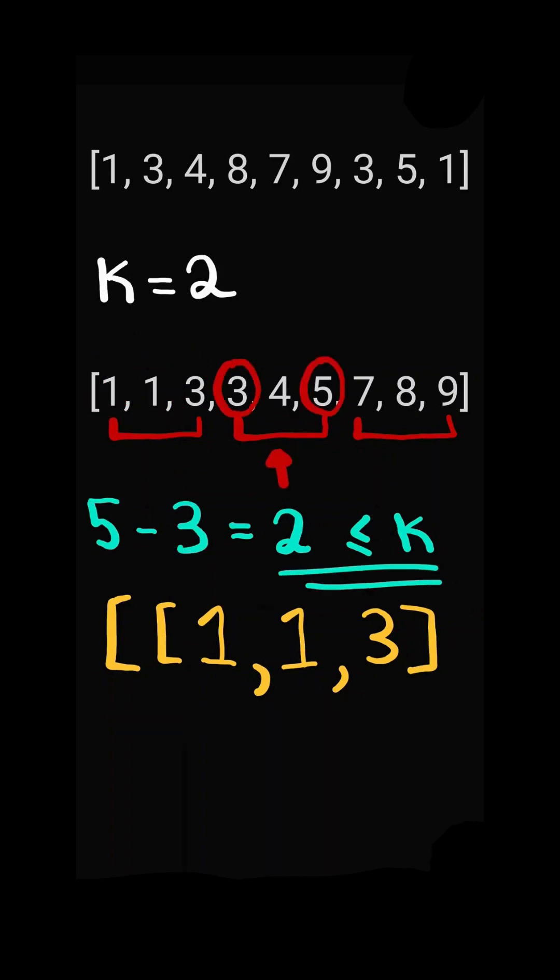The difference is less than or equal to k, so we add the subarray to our result. And we continue.